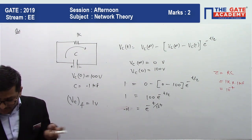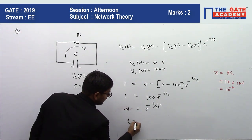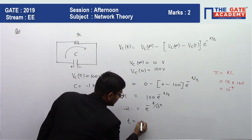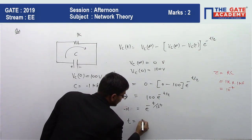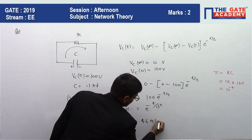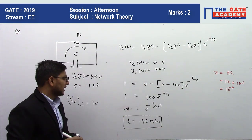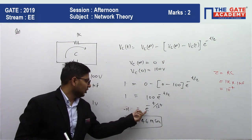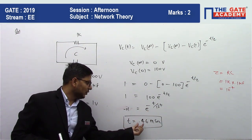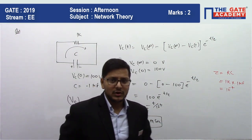After solving — taking the natural log on both sides — we get the value of t equals 0.46 milliseconds.